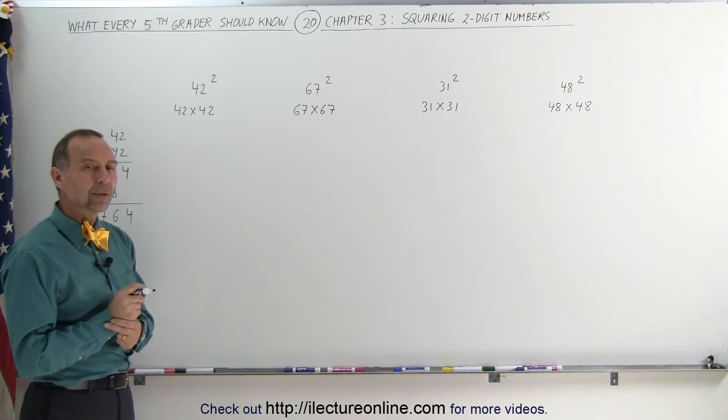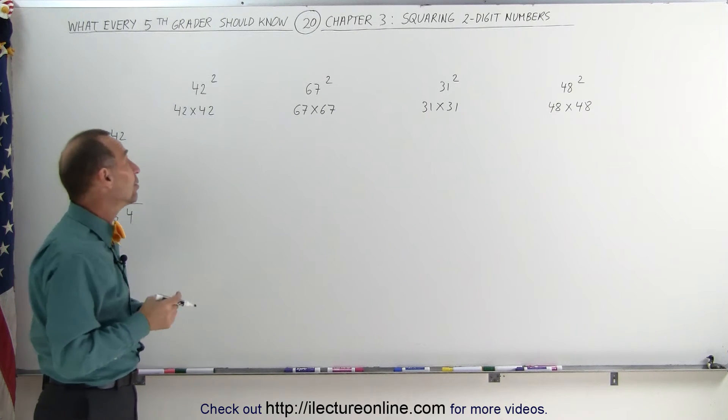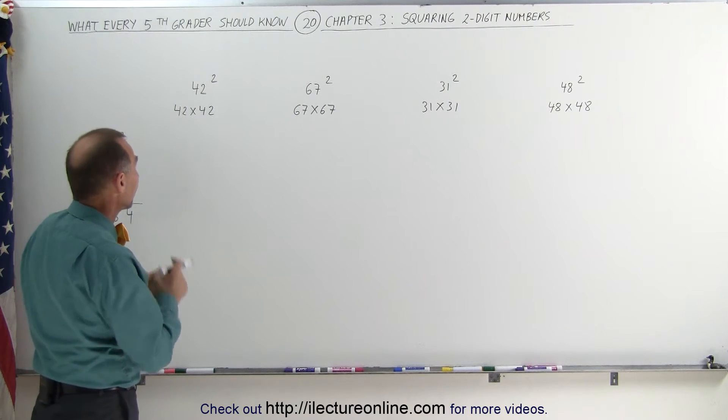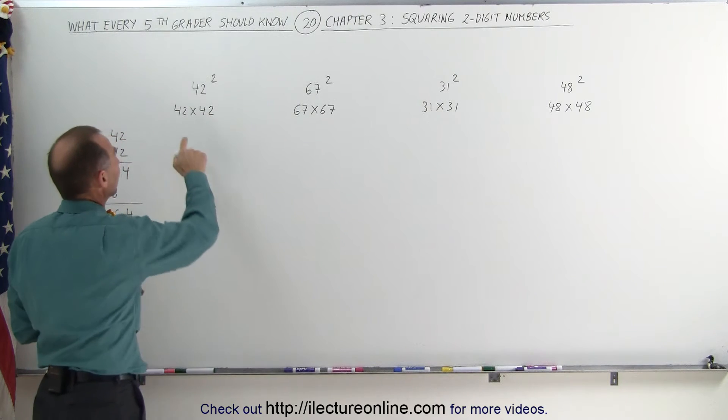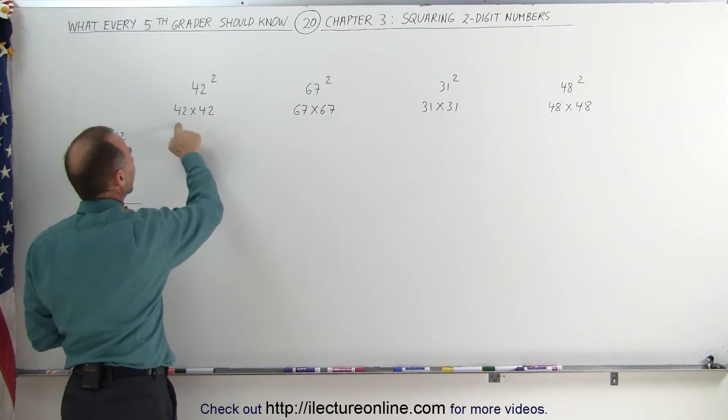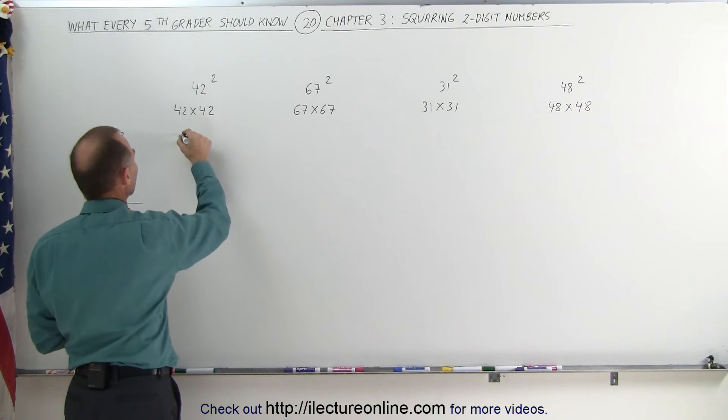But can you do that in your head? Well, one of the ways to start doing that in your head is to follow the following technique. First, you multiply the first two numbers together. 40 times 40, that's like 4 times 4, and add two zeros, so you get 1600.